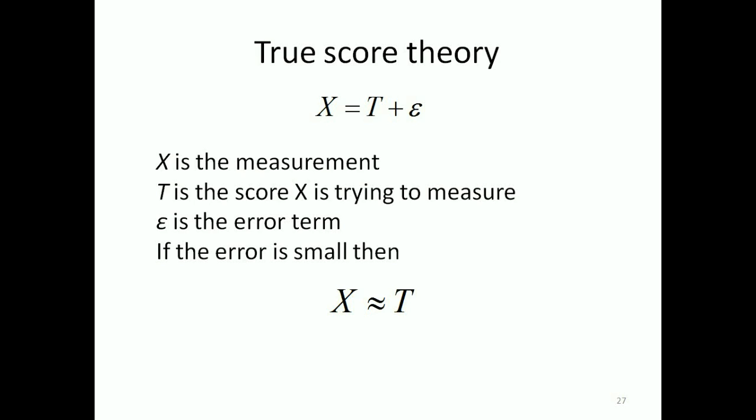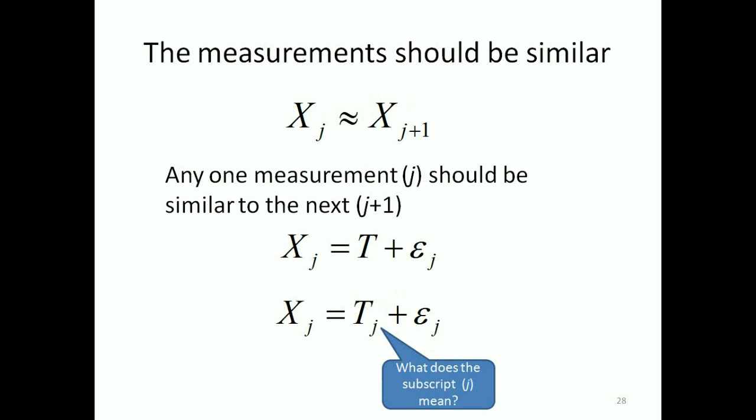So if the error is small, epsilon tends to 0. But when you measure something, you don't just measure once, you repeat the measurements to see if they're similar. That's the whole point of reliability. The measurements should be similar to each other.